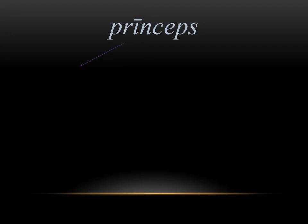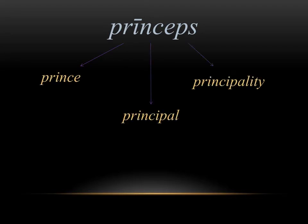Princeps is a word that means emperor in Latin, and from this we get prince, principal, and principality. If you think of a prince, he is the leader of a country — the son of a king, an important person. Just like a principal is the leader of a high school. They're both coming from this root of princeps, which was the emperor.